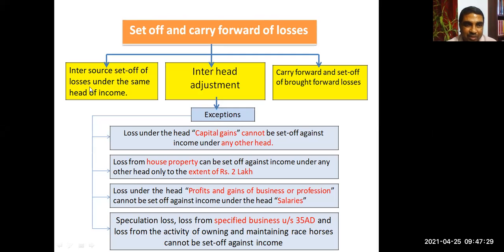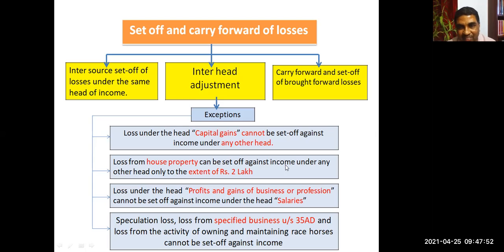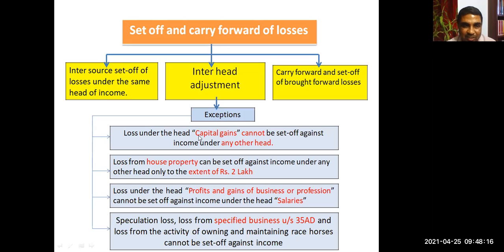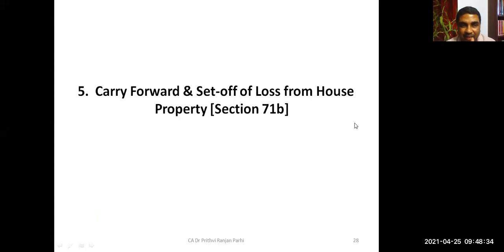To summarize the inter-head adjustment exceptions: loss under capital gain cannot be set off against any other head; house property loss can be set off against any other income but maximum up to two lakh rupees; PGBP loss cannot be set off against salaries; and speculation loss, specified business loss, and race horse losses cannot be set off against income from any other business. Inter-source and inter-head adjustments are now almost complete.